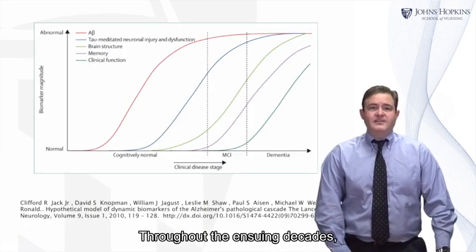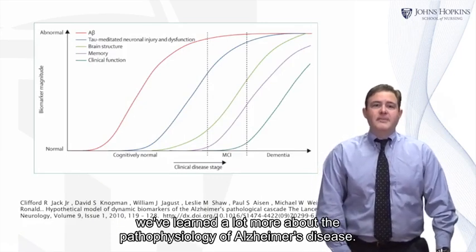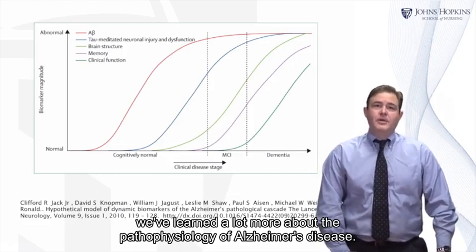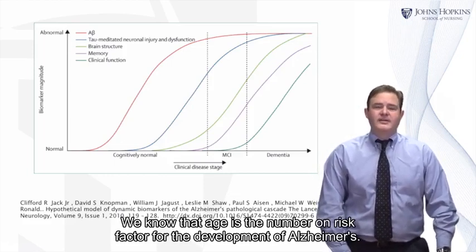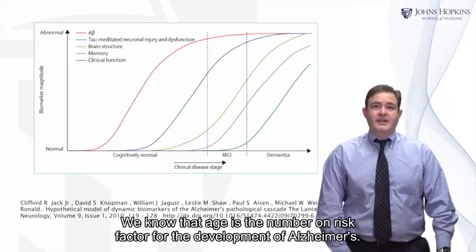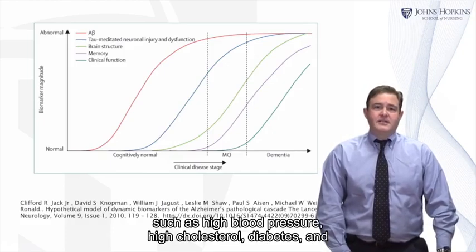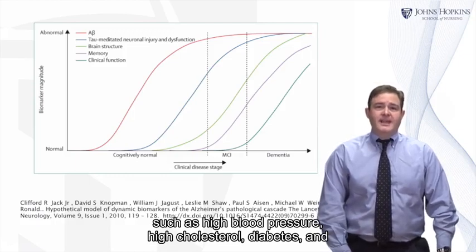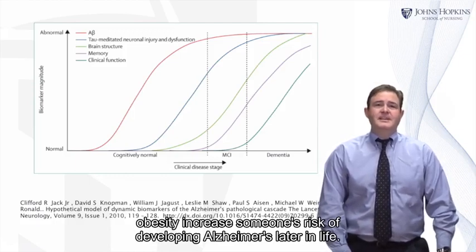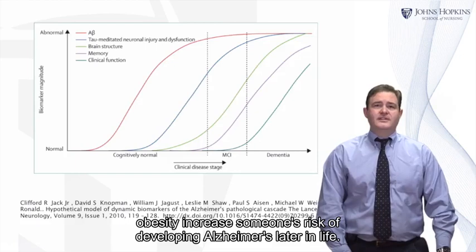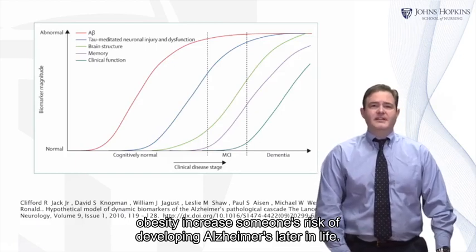Throughout the ensuing decades, we've learned a lot more about the pathophysiology of Alzheimer's disease. We know that age is the number one risk factor for the development of Alzheimer's. We also know that cardiovascular risk factors, such as high blood pressure, high cholesterol, diabetes, and obesity, increase someone's risk of developing Alzheimer's later in life.